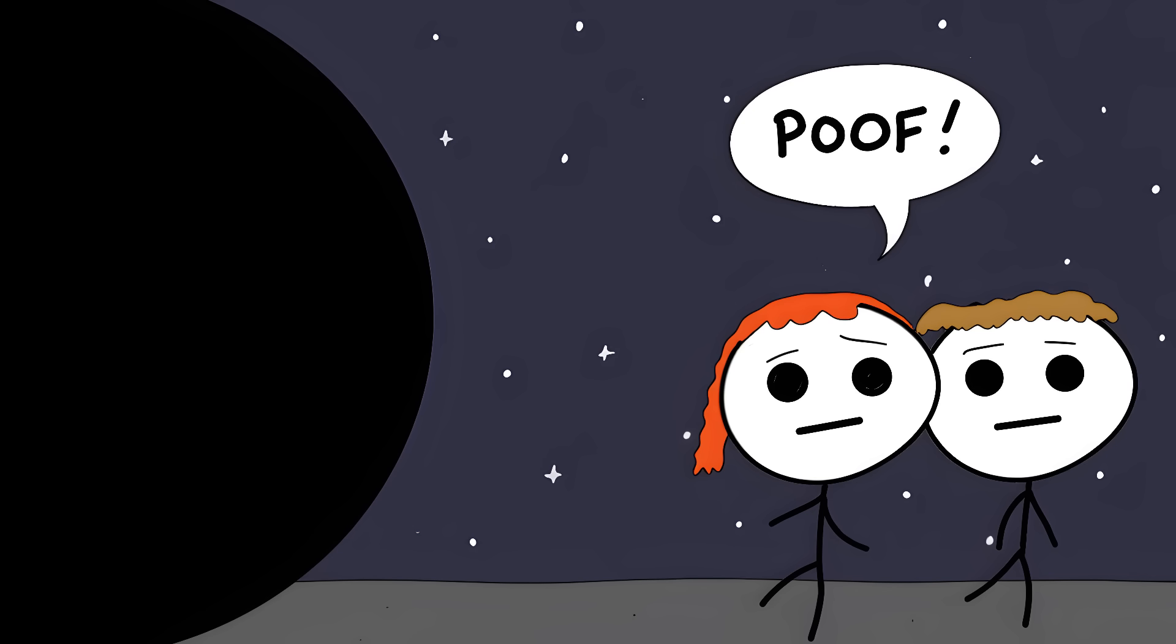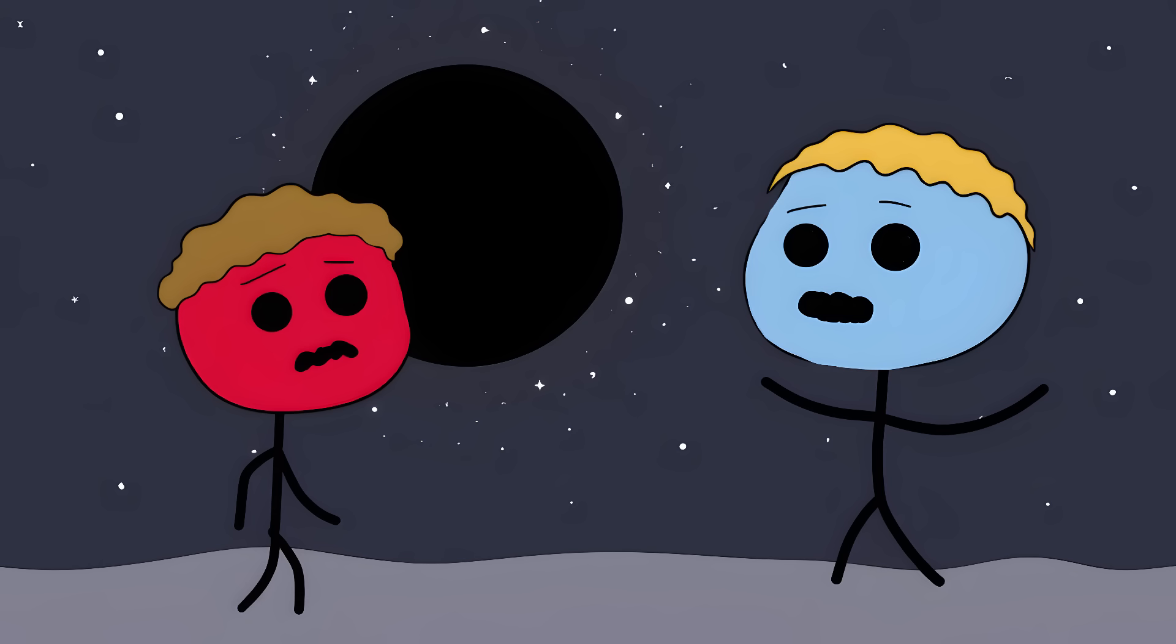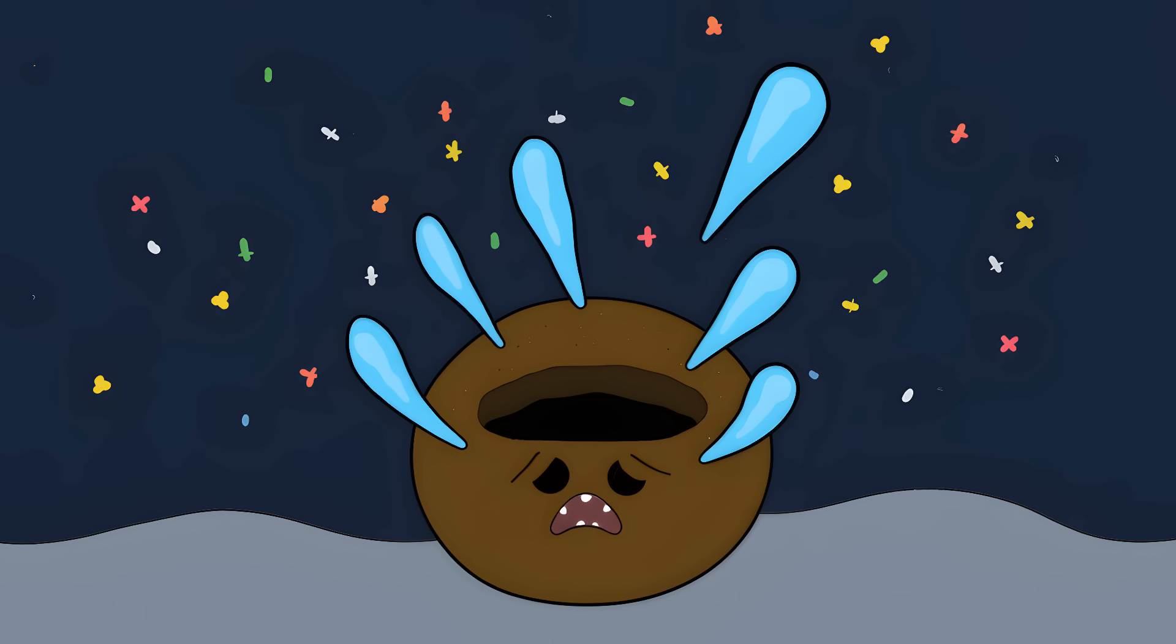These supposedly perfect prisons of light and matter are actually more like a bucket with tiny holes. At the edge of every black hole, pairs of particles are constantly popping into existence. One particle falls in, while its partner escapes into space. Over time, these escaping particles cause the black hole to slowly evaporate.